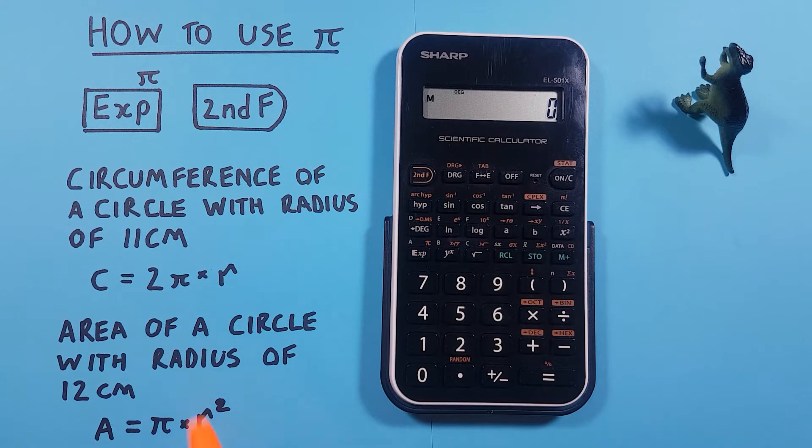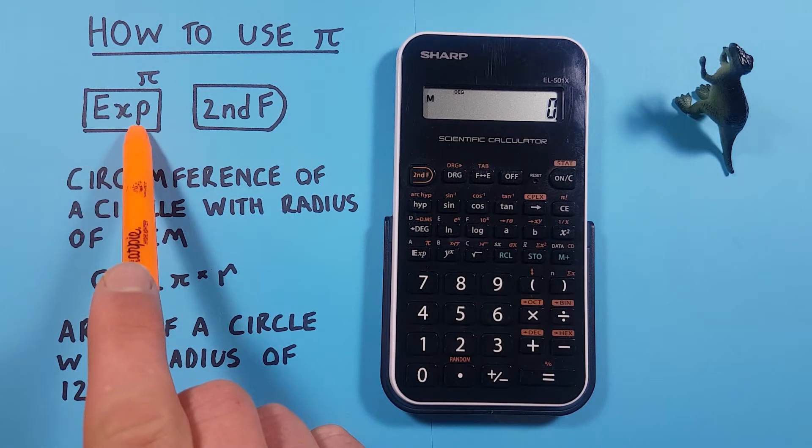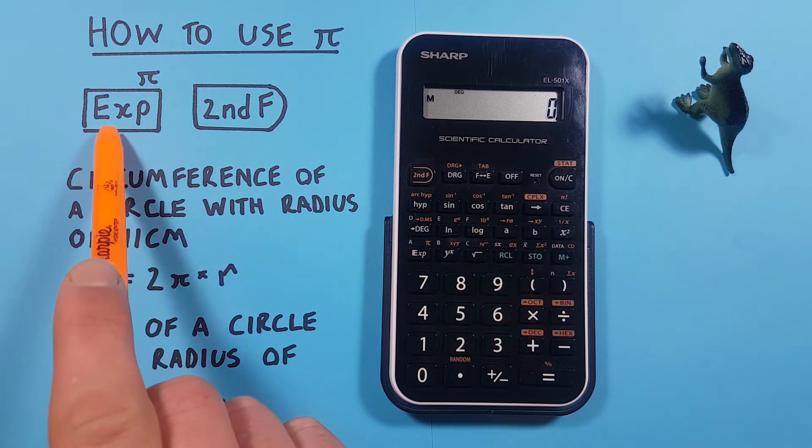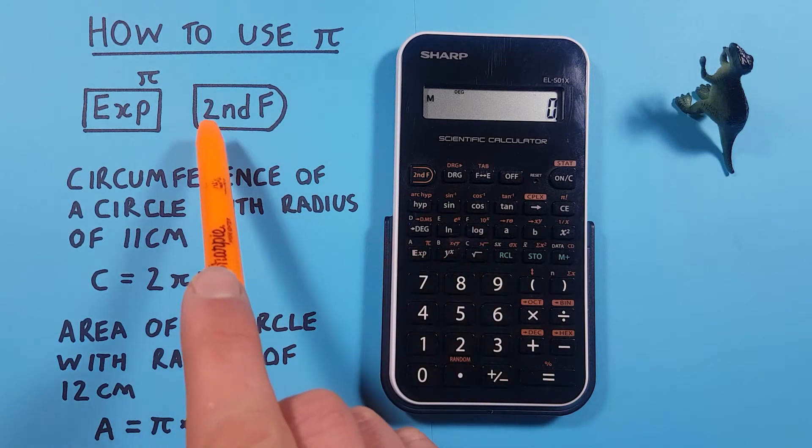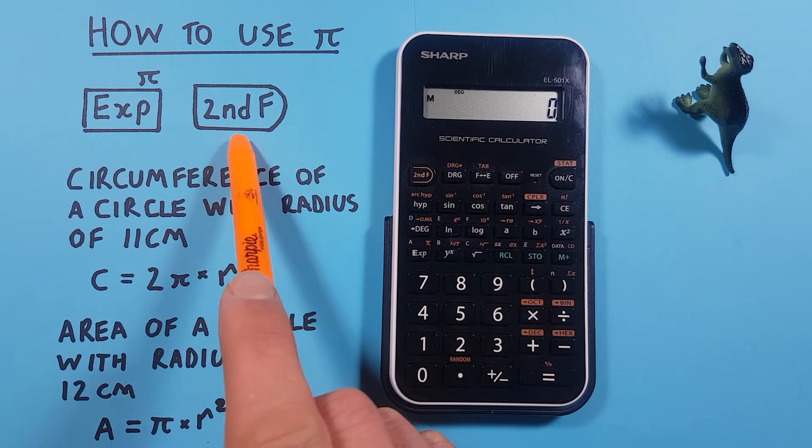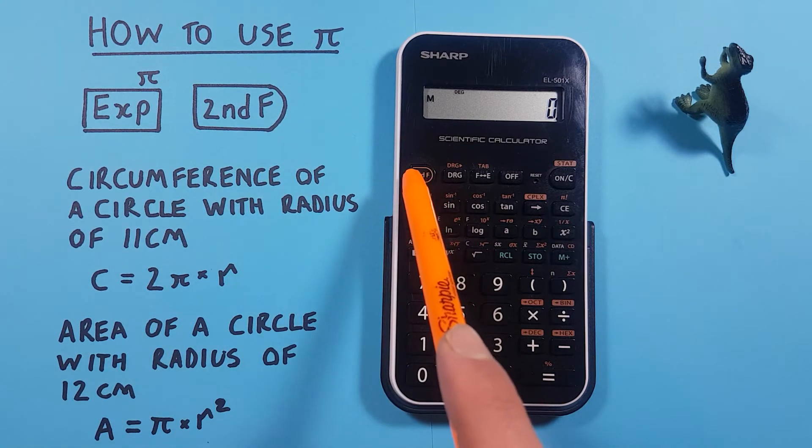To do that we'll be using the exp key that has a second function of PI, located here above the seven, as well as the second function key, located here in the top left corner.